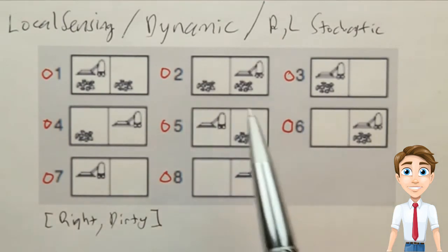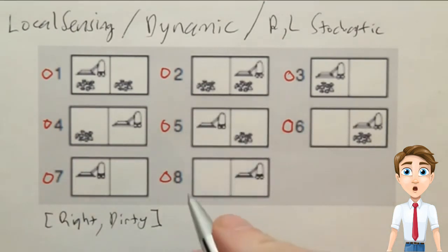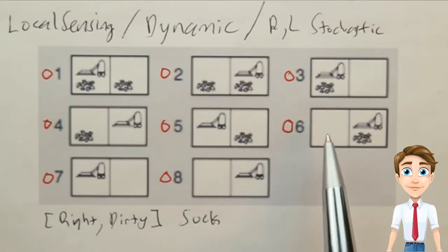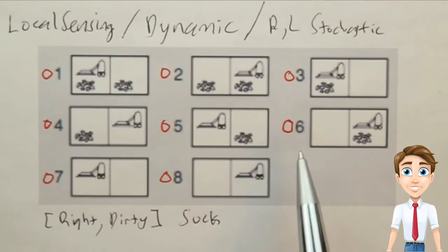Now, our belief state contains 2 and 6, and we decide we want to execute the suck action. So now tell me, by clicking on the appropriate states, what states belong to the belief state after we make a prediction for what's going to happen after the suck action.